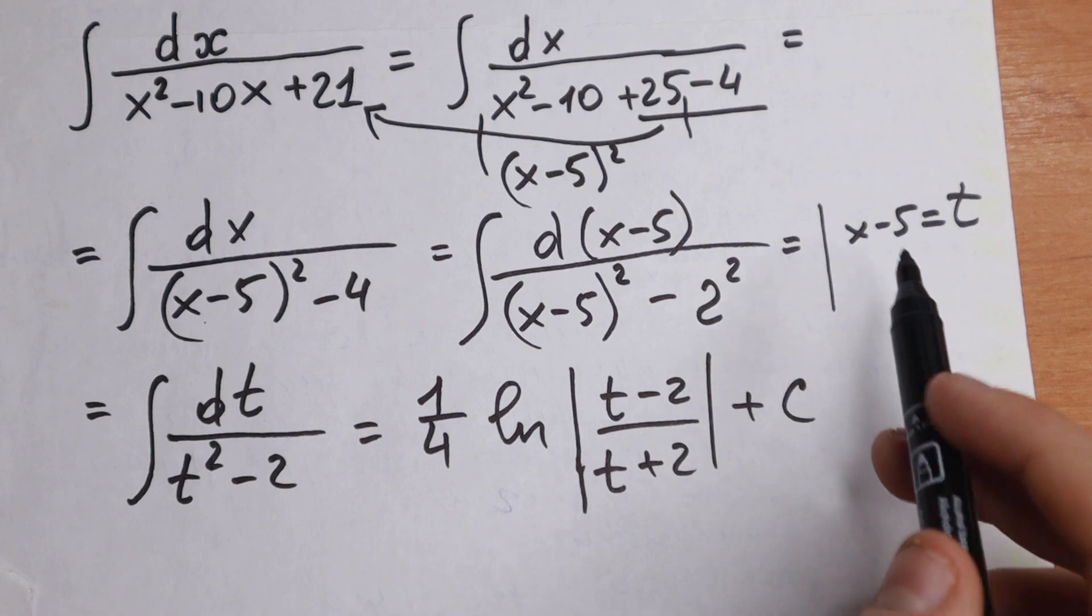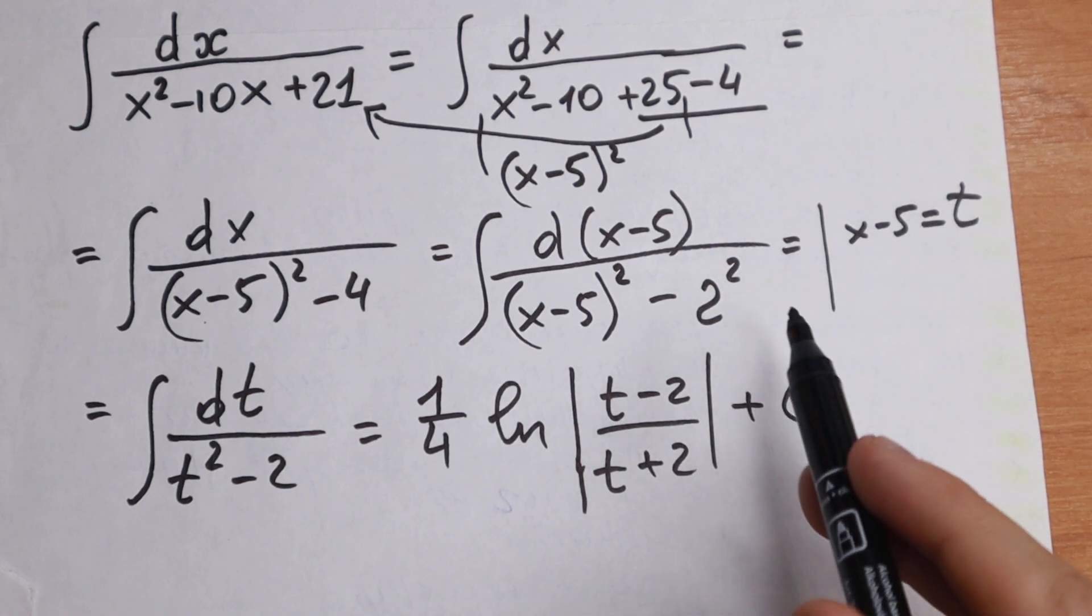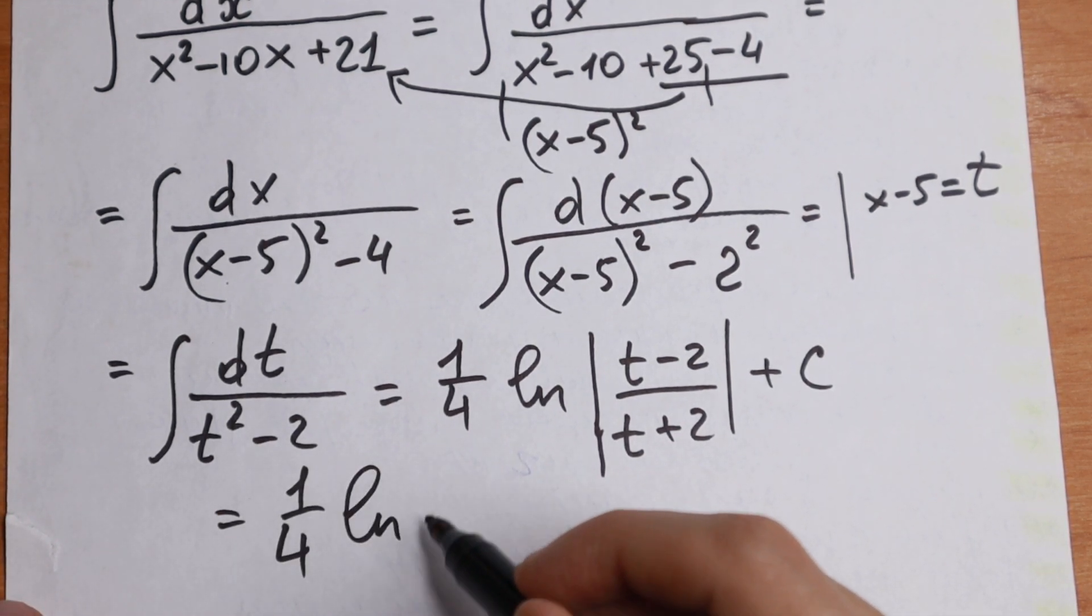And the last step, let's find this. Our final answer, x minus 5 equal to t. So we can write it as 1 fourth, natural log.